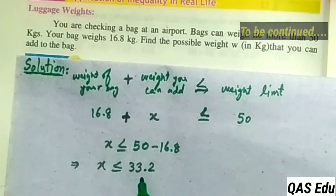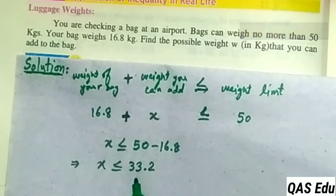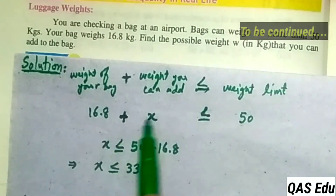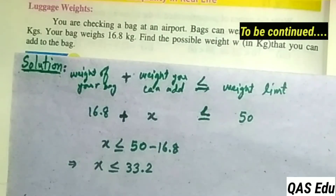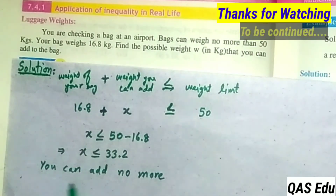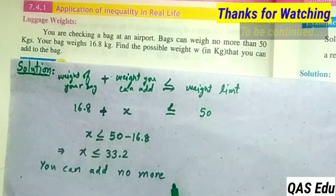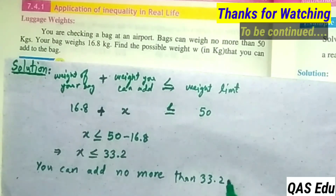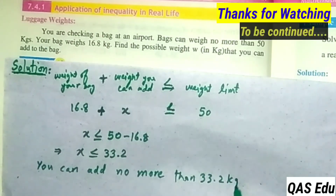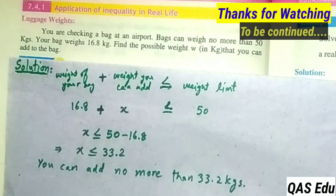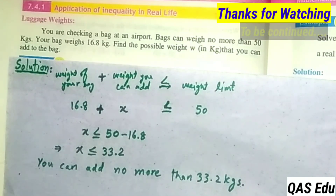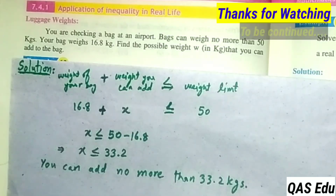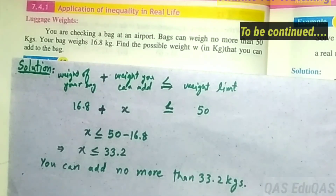So x is less than or equal to 33.2 kilograms. You can add no more than 33.2 kilograms to the bag. This is a real-life application of linear inequalities.